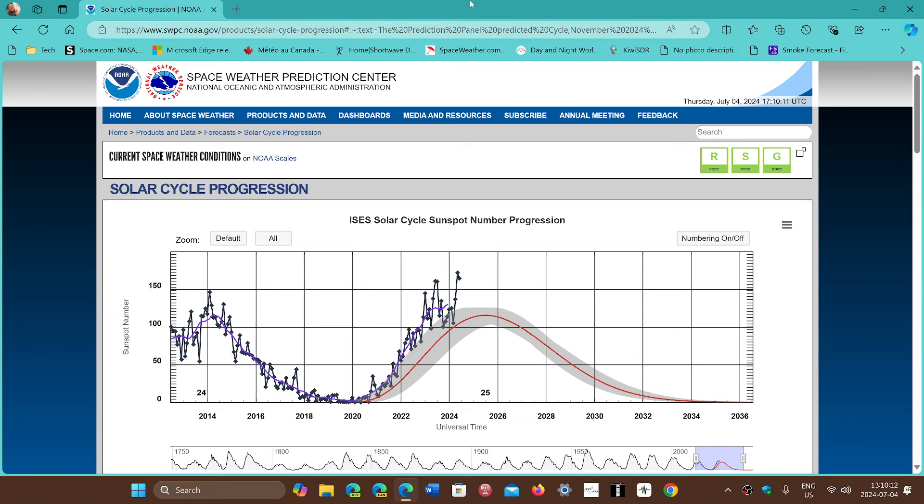Usually when those two peaks arrive, we're pretty much at solar max, and it's been working well looking at the peaks like that for the past cycles.